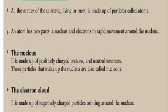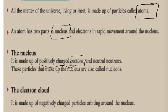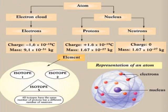All matter in the universe, living or not, is made of particles called atoms. An atom has two parts: a nucleus and electrons that move around the nucleus in a rapid movement in the electron cloud. The nucleus is made up of positively charged protons (P+) and neutral neutrons (N0), and these particles are called nucleons.